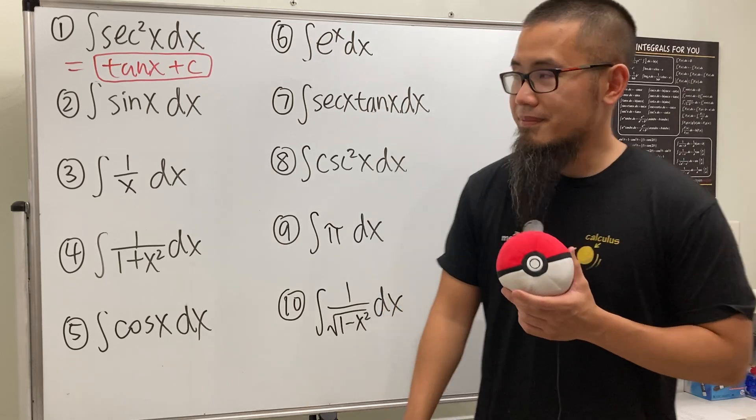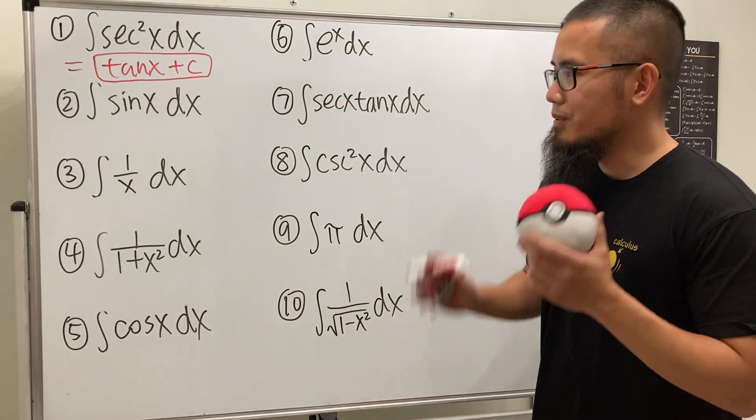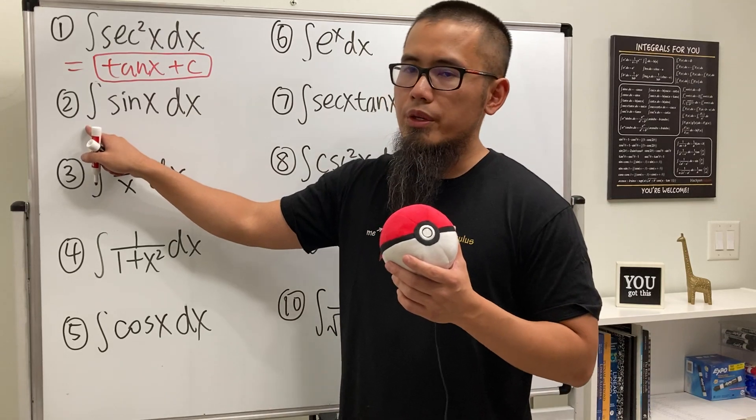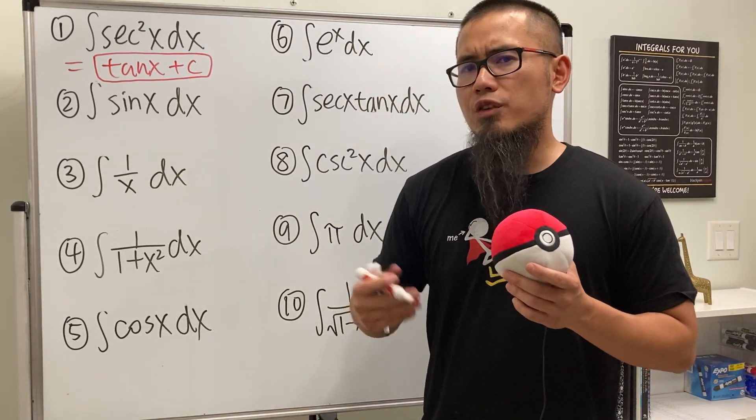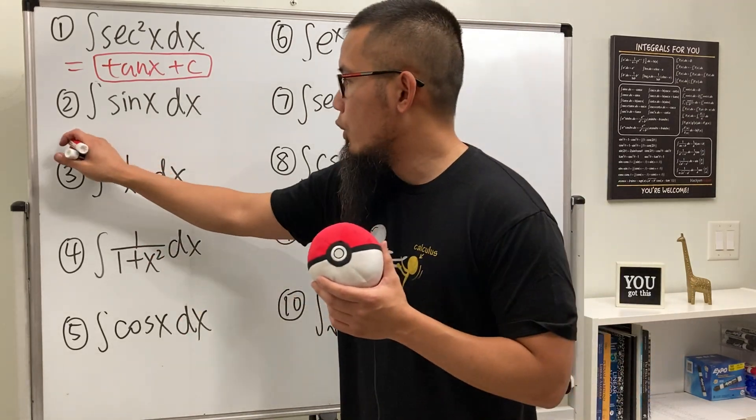You're done? Cool, let's continue. Number two, integral of sine x. Well, derivative of cosine is negative sine, so we have to negate that.